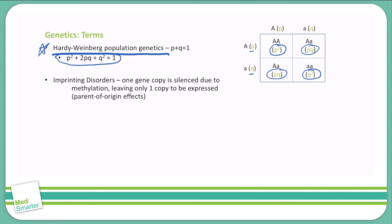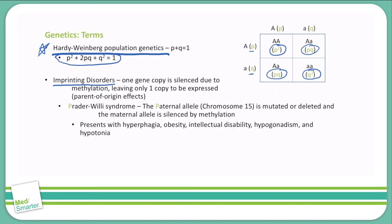Moving on, imprinting disorders. This is where one gene copy is silenced due to methylation, and this leaves only one copy to be expressed. So there are two common ones: Prader-Willi syndrome and Angelman syndrome. Prader-Willi starts with a P, and that is a paternal allele that is mutated. So the mutated or deleted paternal allele causes the problem with Prader-Willi. We see this manifested as hyperphagia, obesity, intellectual disability, hypogonadism, and hypotonia.